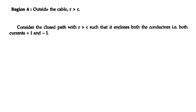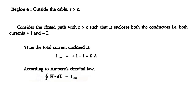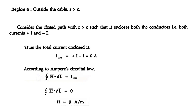Region 4 is outside the conductor. Outside the cable, the total current is +I plus (−I), which equals 0. So by Ampere's Circuital Law, H·dL = 0, meaning H vector equals 0. There is no magnetic field outside the coaxial cable. We have now found the magnetic field intensity for all four regions.